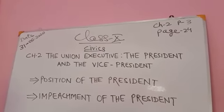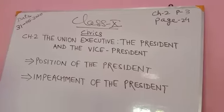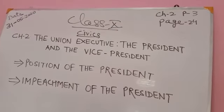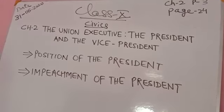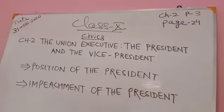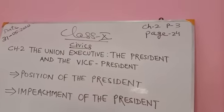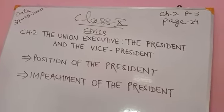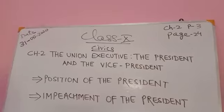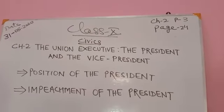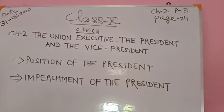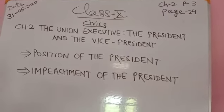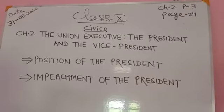The president of India receives a monthly salary of 1,50,000 rupees. He also receives a monthly pension after retirement. He is entitled to a furnished rent-free official residence. His salary and allowances cannot be diminished during his term of office. He is also entitled to maintenance allowance for a personal secretariat.